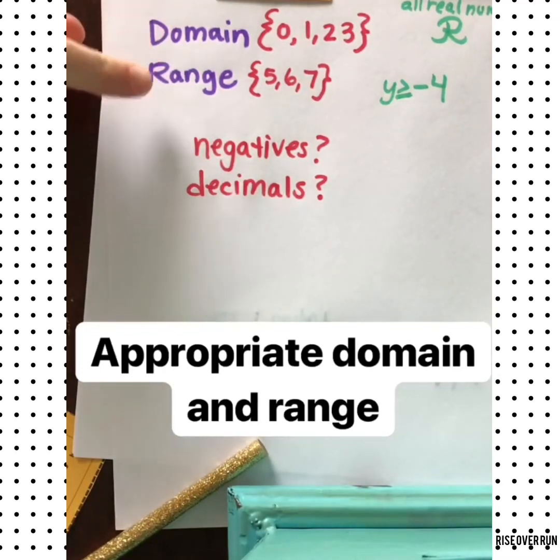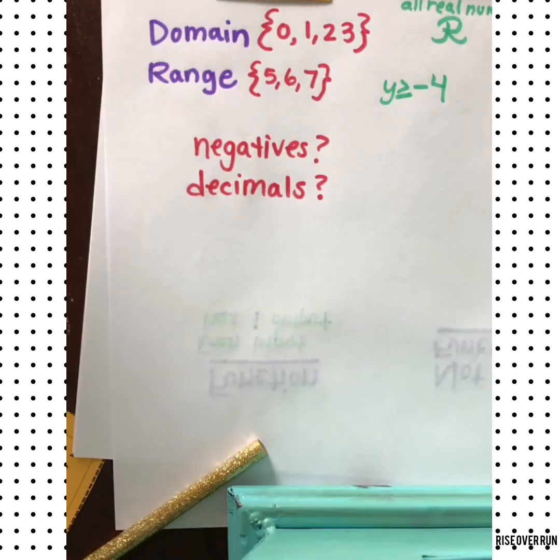Watch out when you're picking a domain and range for a word problem. Sometimes negatives or decimals may not be appropriate. If you are writing a function based on number of people or number of animals or something that you have to count whole items, then you probably don't want to allow decimals in your domain or range. And you may not want negatives. Just think logically, could you have a decimal of whatever that function is about? Or would a negative number be appropriate? That will help you pick an appropriate domain and range.